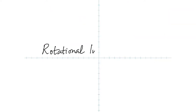Now we introduce a new quantity called rotational inertia. Have we heard of inertia? What is inertia? A moving object wants to stay in motion, and an object at rest wants to stay at rest. On a fast-moving bus, there's a heavier and a lighter person. The bus suddenly stops — who has a greater fall? The heavier person, because they have a bigger inertia. Why? Because the person's mass is bigger. In linear motion, inertia depends on mass.